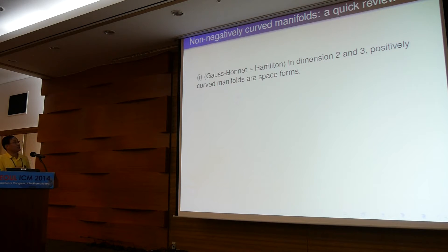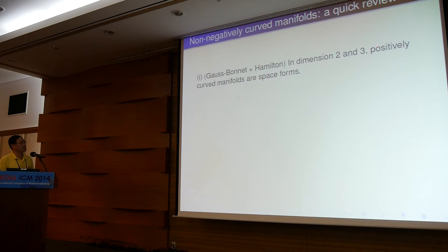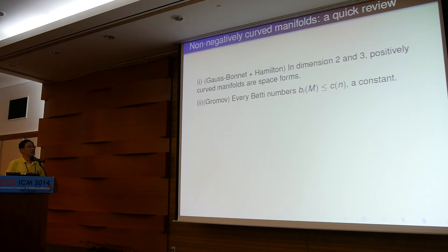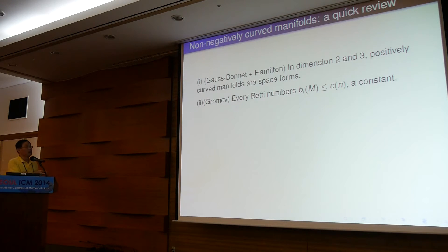Classically, let's record some very basic background. From classical results and the famous work of Richard Hamilton, in dimensions 2 and 3, positively curved manifolds are exactly the space forms — you don't have much more than that. This gives a complete picture for manifolds with positive curvature. In high dimensions, the famous Gromov theorem tells you that every Betti number is strictly bounded above by some constant depending only on the dimension n of the manifold. So that's a universal constant, and you also have universal bounds for topological quantities.